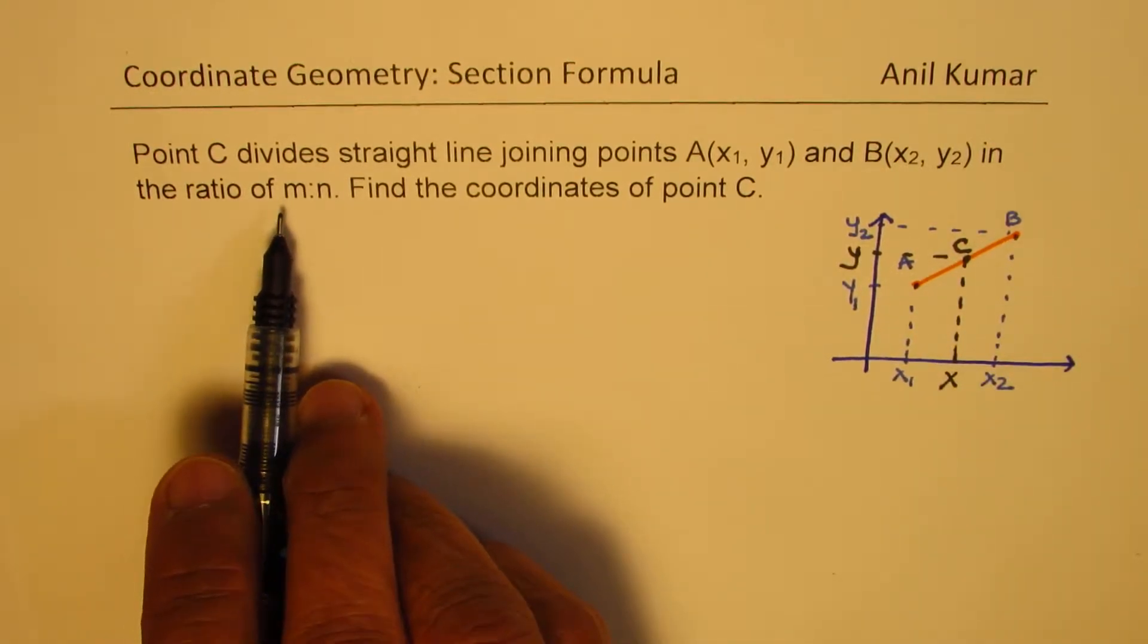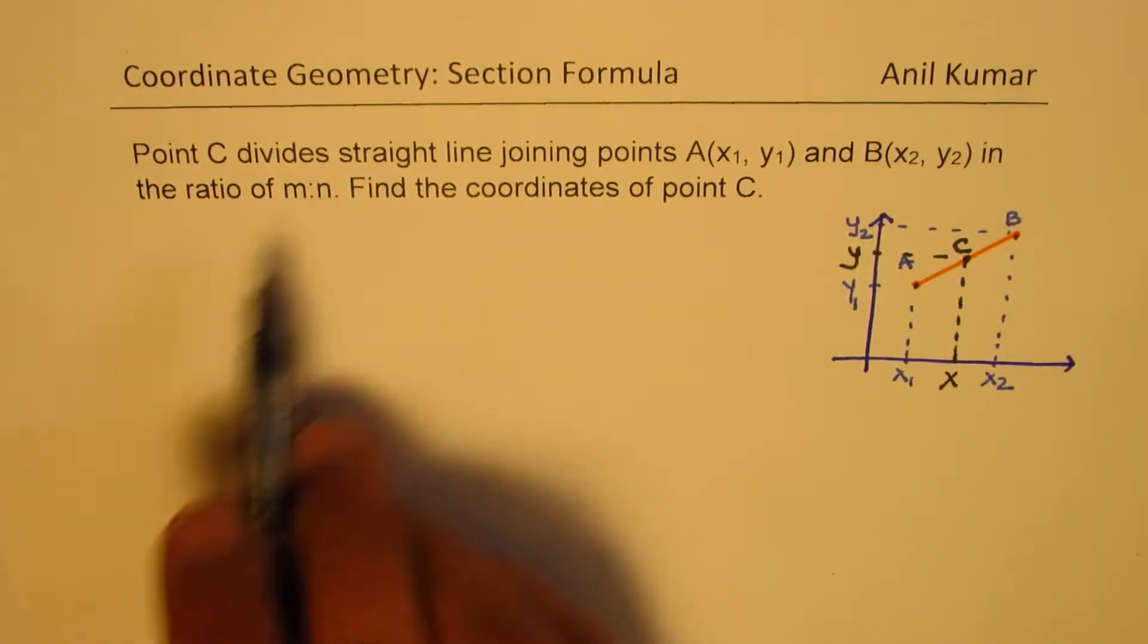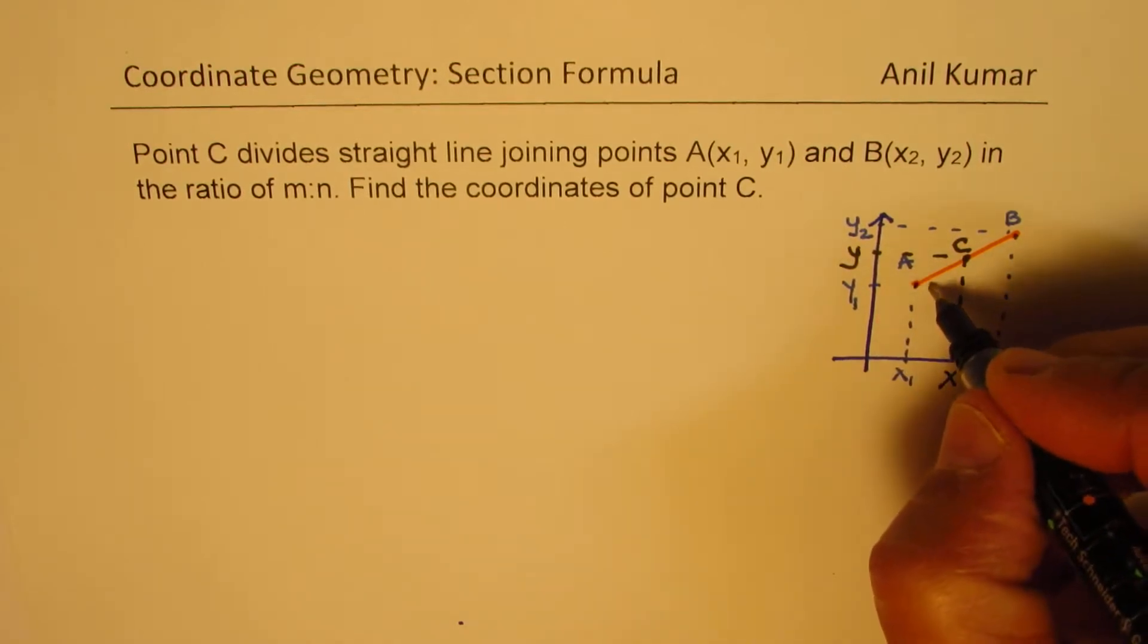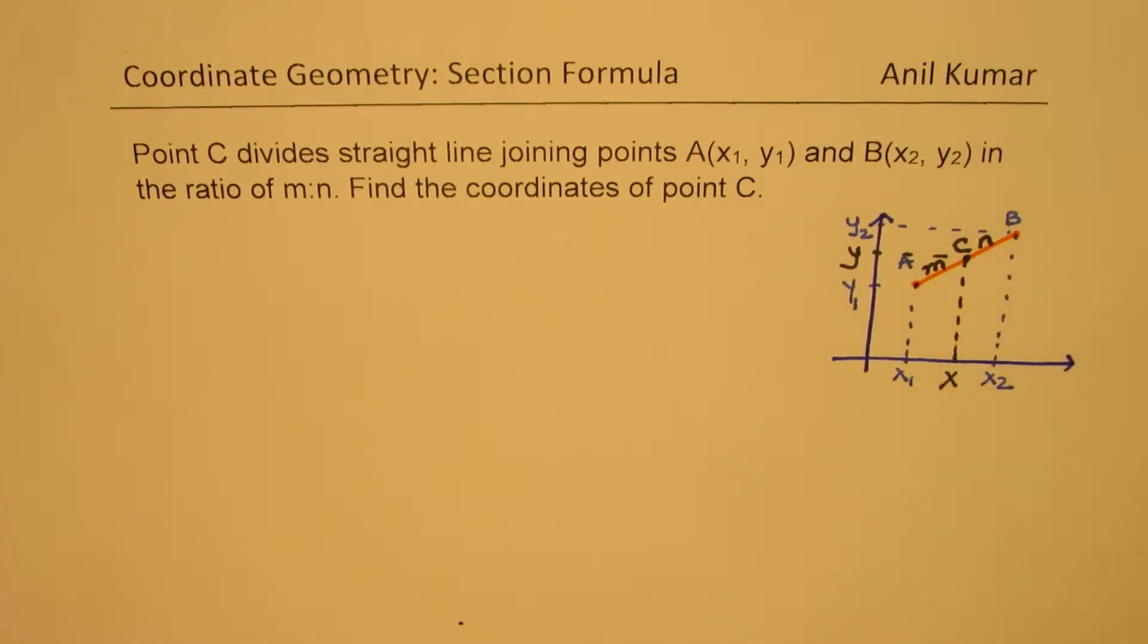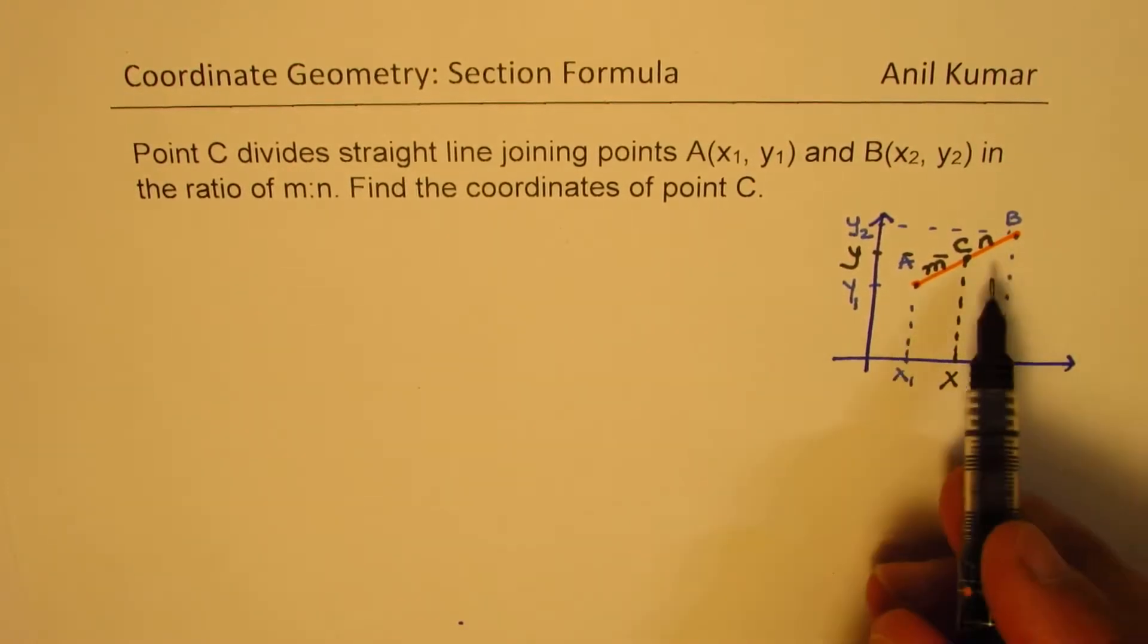The ratio is given to us as m is to n. So this side will say this side is m for us. And that side is n. So total length A to B is m plus n. So that is how we will depict the scenario.